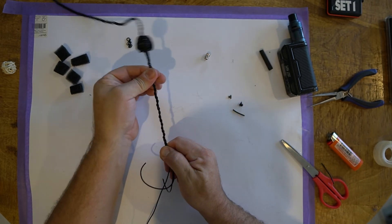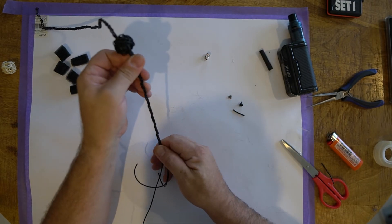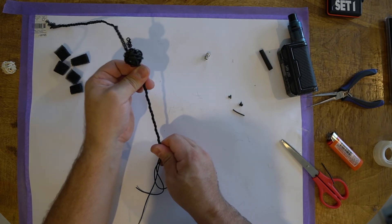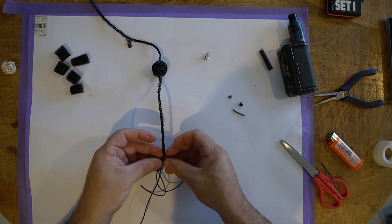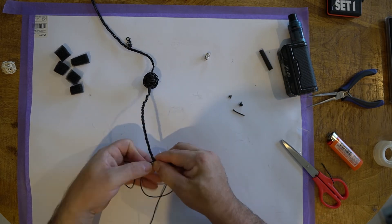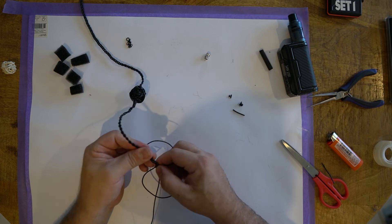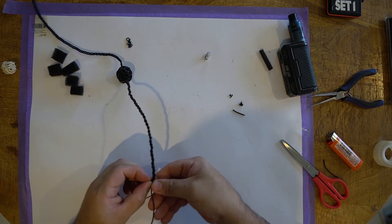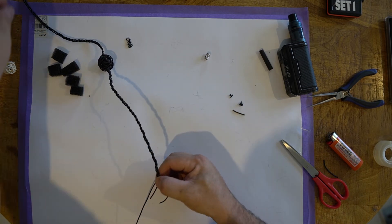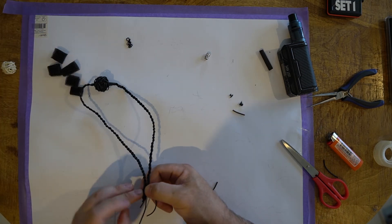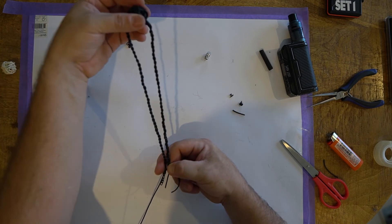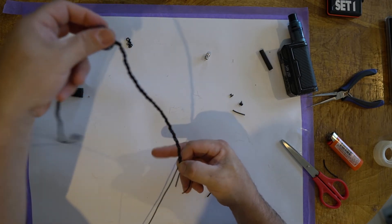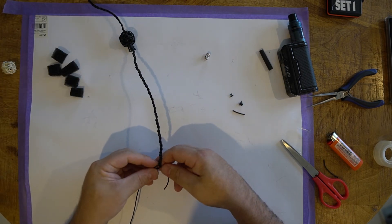It does help once in a while to just run your fingers down, put a bit of tension on it. So it does help to just get a rough idea of how you're going with symmetry. We're a little bit shorter this side but that's okay because we do have a little bit further to go.